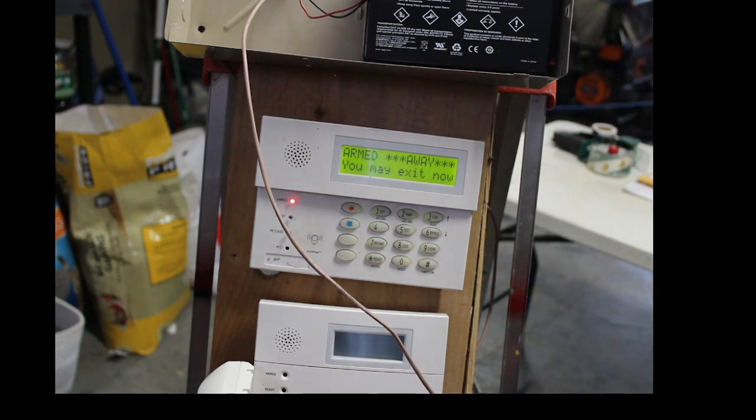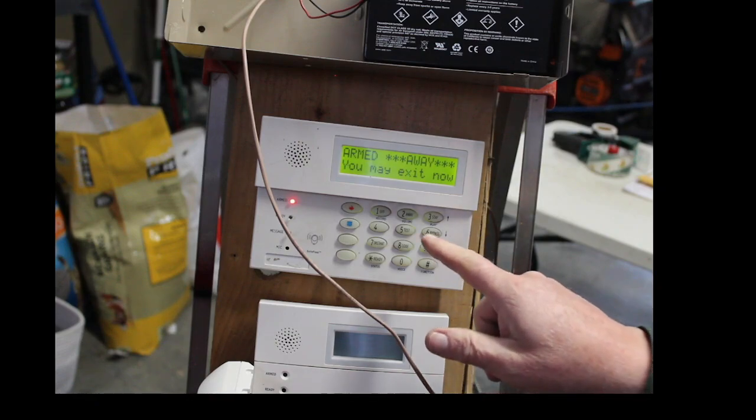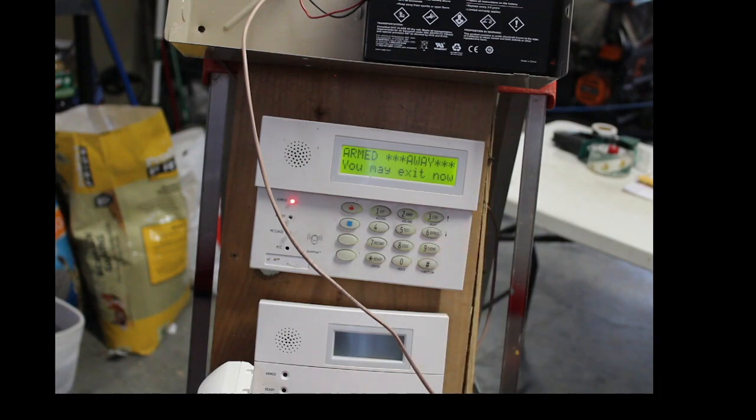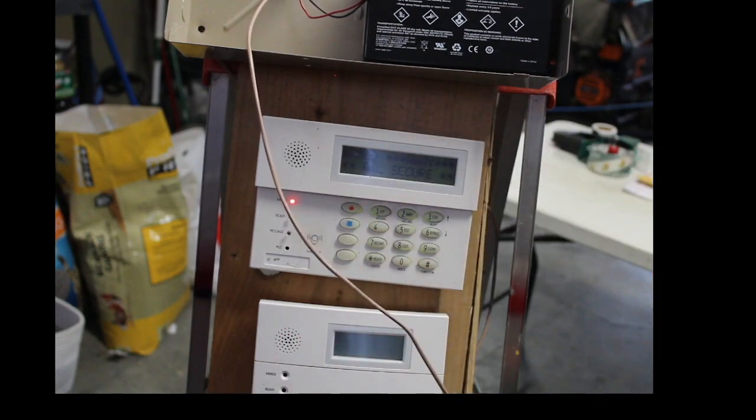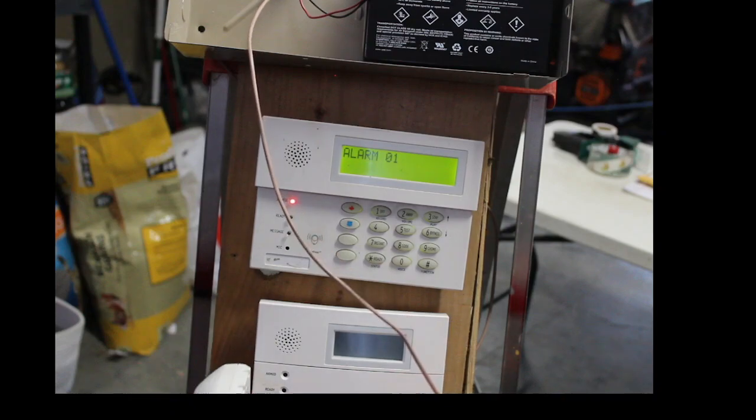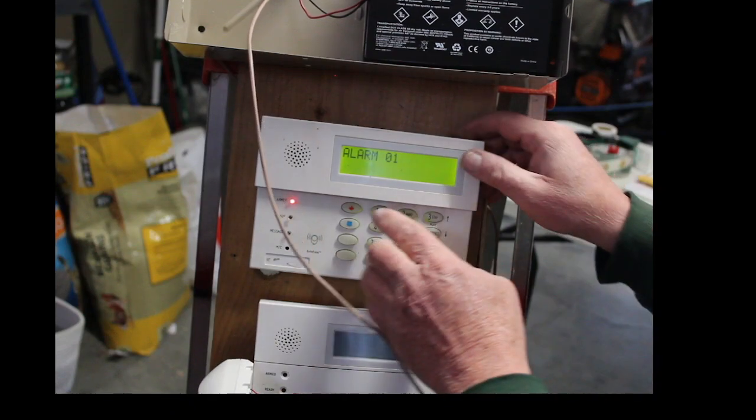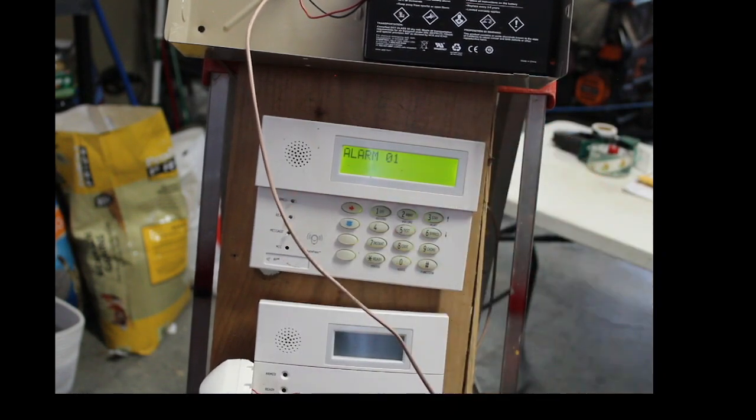So, now, this is programmed as an interior follower, meaning that if you have it near a delay door where you enter the home and the motion detector is going to see you before you get over to the keypad to shut it off, this will honor a delay door opening. But, if, say, an intruder breaks through a window and doesn't open a delay door, you know, open and close, it should go off instantly. So, now, let me just trip it. Alarm. See, that went off instantly because it did not see. Let me shut this off.